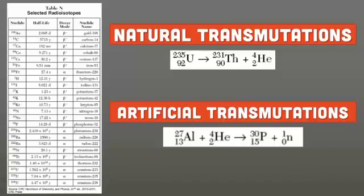On reference table N, you see a list of selected radioisotopes. Those will naturally go through their transmutations as listed in the decay modes. Uranium-235, when you look it up, it has an alpha decay, and it comes out with a daughter isotope of thorium-231. Notice that there's only one reactant.